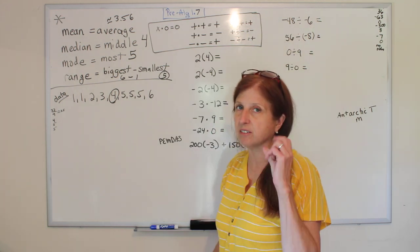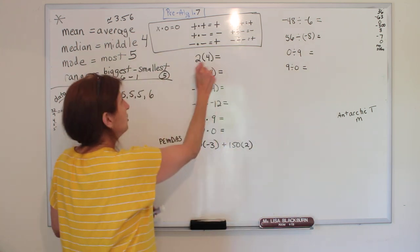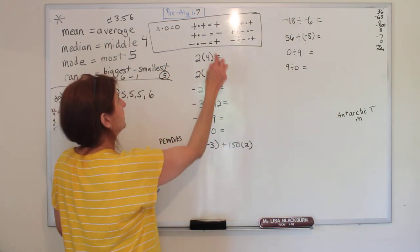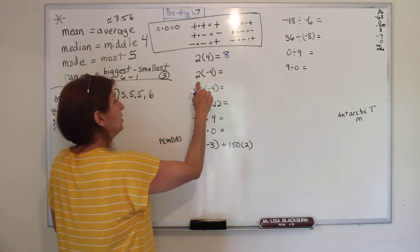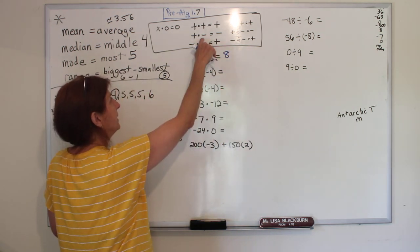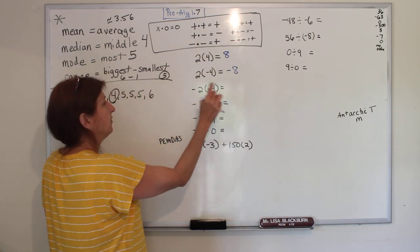All right, so let's try some of these. 2 times 4, they're both positive, so it's positive 8. 2 times negative 4, one is negative, so it's negative 8. Negative 2 times negative 4, two negatives, weirdly makes a positive.